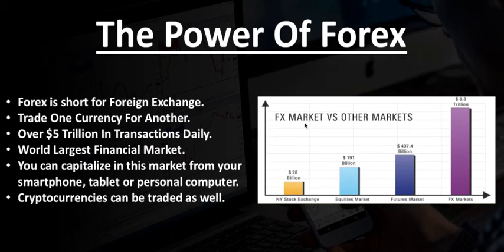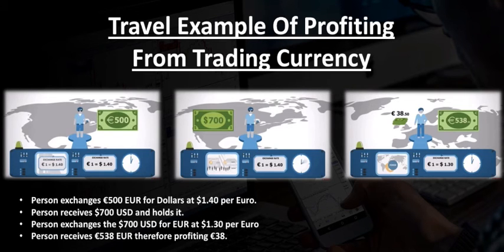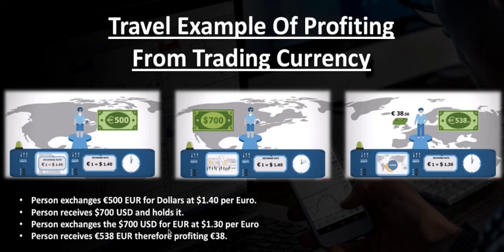Here's a chart where you can look at the FX market — the Forex market — compared to other markets: the New York Stock Exchange, the equities market, the futures market, and the Forex market. Now here's a travel example of profiting from trading currency. Let's say a person exchanges €500 for dollars at $1.40 per euro. The person receives $700 USD and holds it. Now let's say that the person exchanges the $700 USD for euro at $1.30 per euro. The person now receives €538, therefore profiting €38.